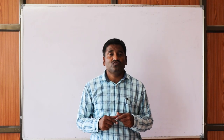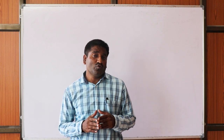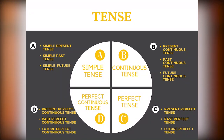In each group I am going to introduce you to three tenses. Group A, simple tense: simple present, simple past, and simple future. Group B, continuous tense: present continuous, past continuous, and future continuous.